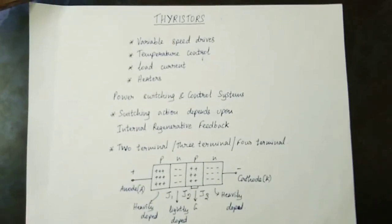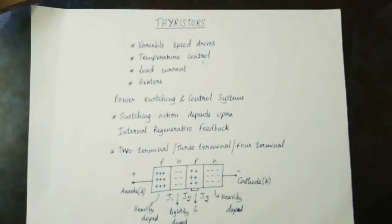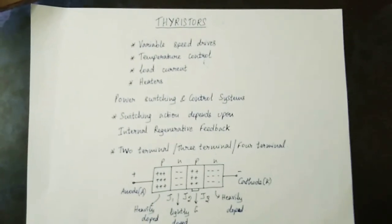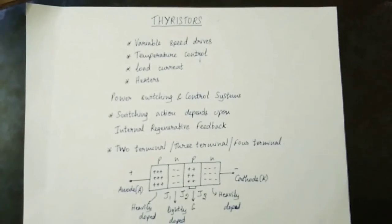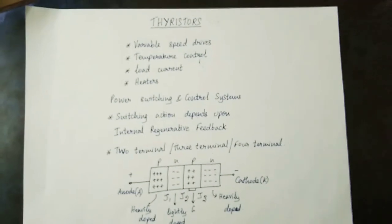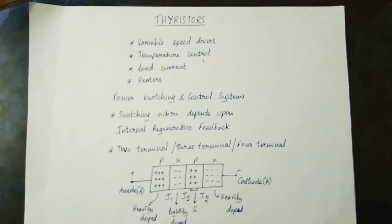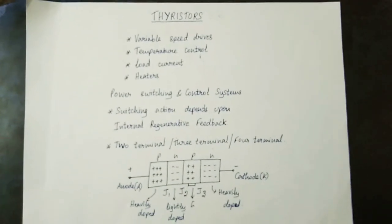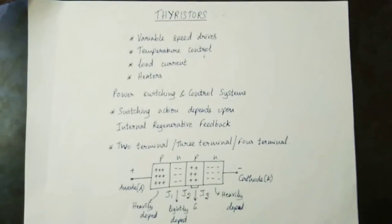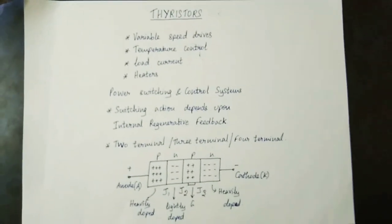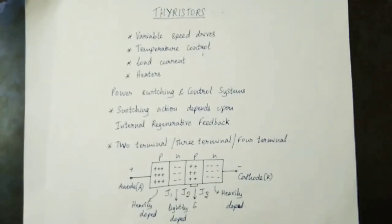Thyristors are 4-layer devices. Diodes are 2-layer devices. Transistors are 3-layer devices. What are the diodes and transistors? You can use variable speed drives, temperature control, load current, and heat.